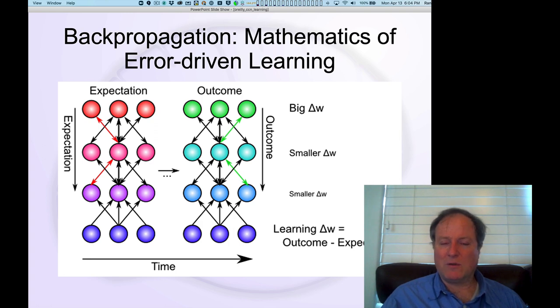Rumelhart, Hinton, and Williams published this result in 1986. Many people had actually published it prior to that, but the real significance and importance of this result and this ability to do error-driven learning through these multiple layers and therefore overcome the limitations identified by Minsky and Papert in 1969, that's really what all came to fruition in 1986 with the publication of that backpropagation paper.